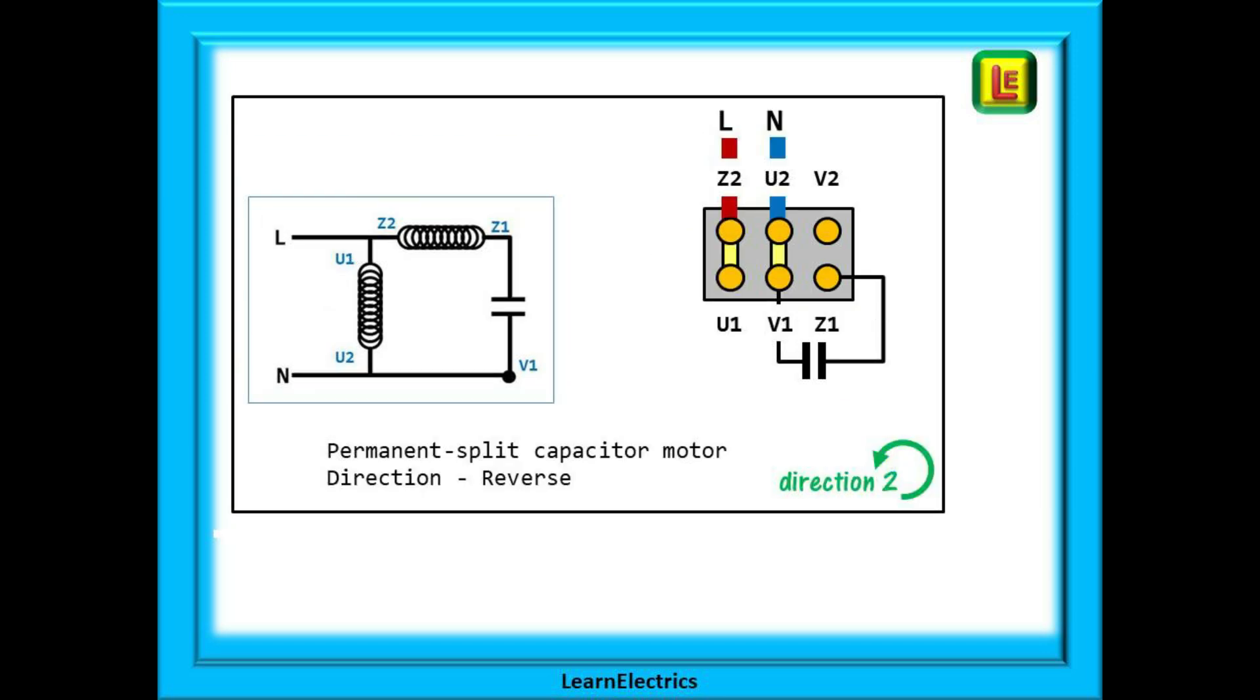If we want the same motor to spin in the opposite direction then we must change the position of the links and the position of the incoming phase and neutral. Now we will link Z2 to U1 and U2 to V1. The phase stays connected to the Z2 terminal but we must reposition the neutral onto the U2 terminal. The incoming supply cables must always be in line with the links.